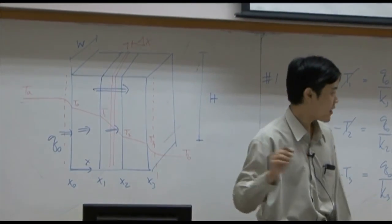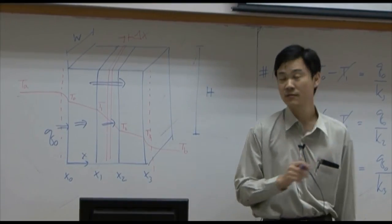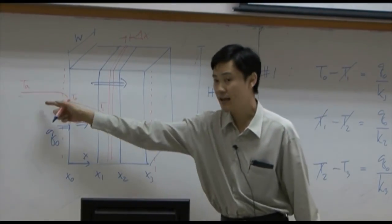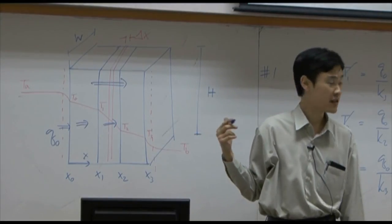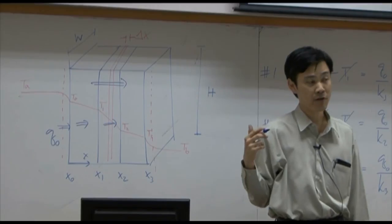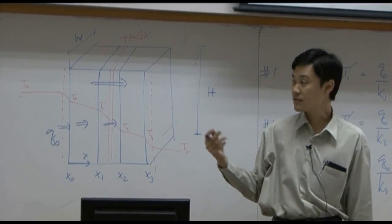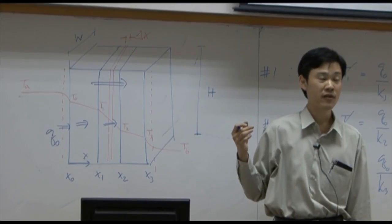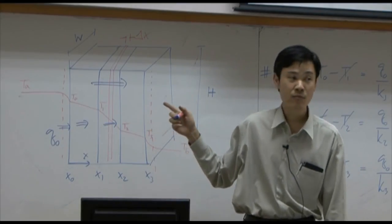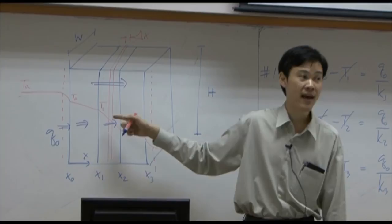So as long as you use overall heat transfer coefficient, you can just measure temperature in and out and then you can use it right away. This is very convenient and very practical because in general, in practical terms, it is very hard to measure temperature right in between at the interface.